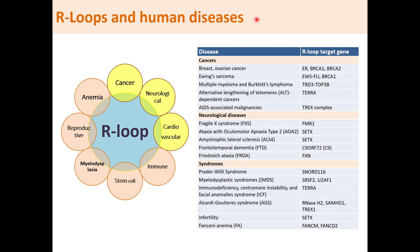As R-loops play many transcriptional and non-transcriptional molecular functions, aberrant R-loops are associated with many human diseases, such as cancer, neurological, cardiovascular, immune, stem cell differentiation, regenerative, myelodysplasia, reproductive, and anemic diseases or conditions. We will discuss R-loops in cancer, neurological, and cardiovascular diseases in more detail.